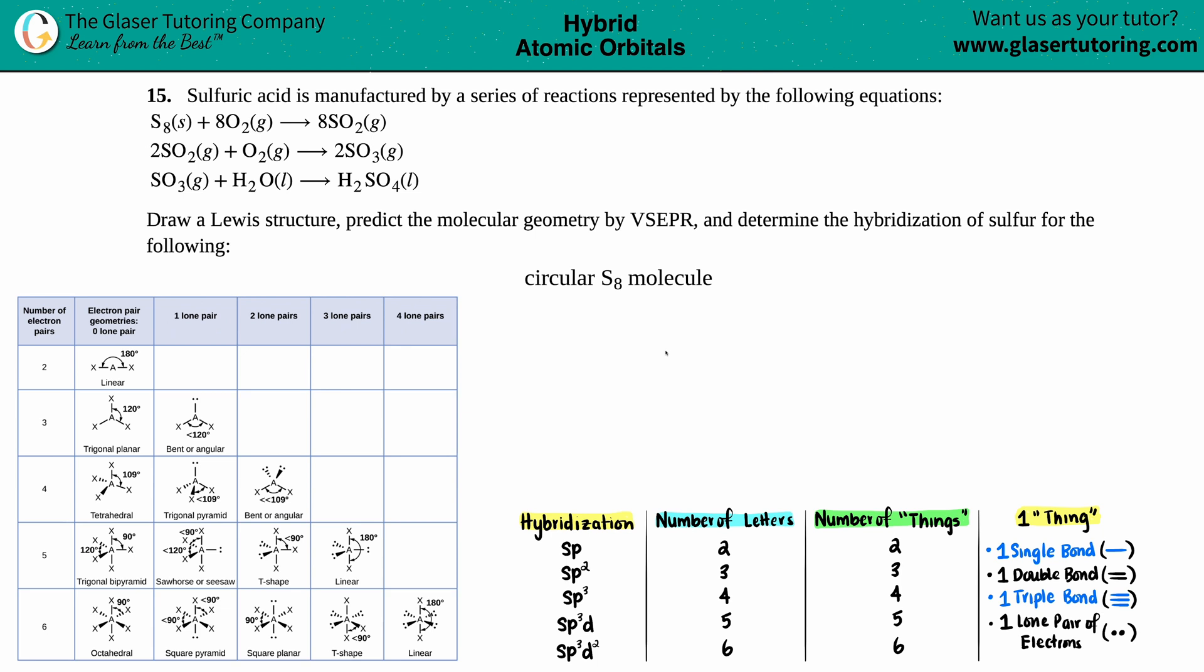Number 15. Sulfuric acid is manufactured by a series of reactions represented by the following equations. So here's the three equations here. Then it says, draw a Lewis structure, predict the molecular geometry by VSEPR, and determine the hybridization of sulfur for the following.